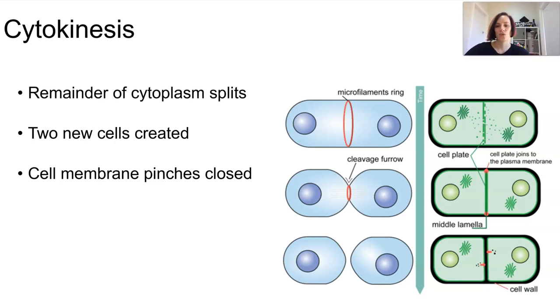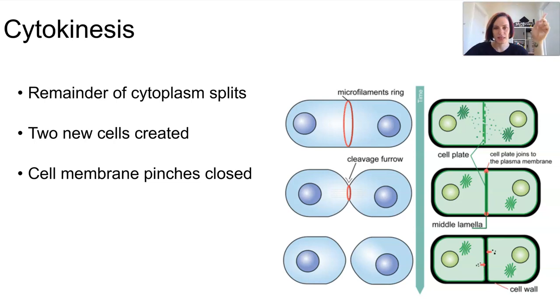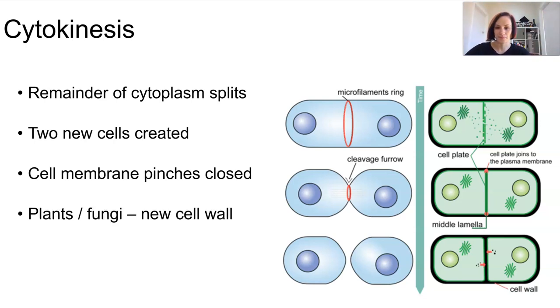In plant and fungal cells, the cell wall materials are sent out into the center of the cell where the new cell membrane has pinched in, and the wall is built toward the already existing wall.